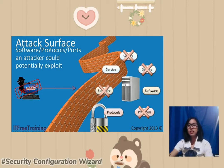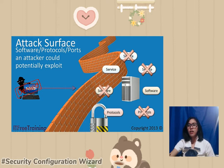First, let us know the process by which your computer becomes more secure. This is called hardening. Going back to the SCW, or Security Configuration Wizard, what we can see in this picture is a server being accessed by an unauthorized user or hacker.